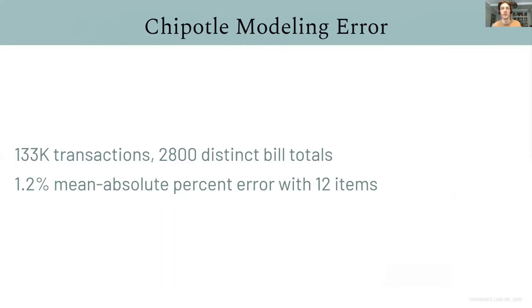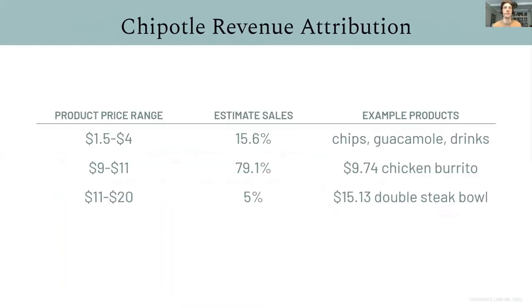So, we use our method to take 133,000 Chipotle transactions with thousands of distinct bill totals, and we show that we can model these 133,000 transactions as being combinations of mostly 12 price points. In other words, we estimate that 12 key price points account for most of Chipotle's sales.